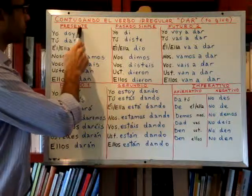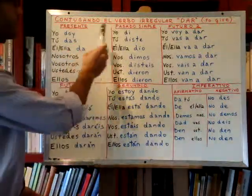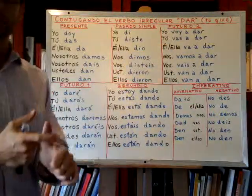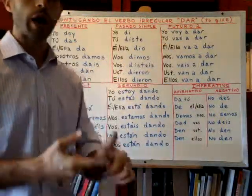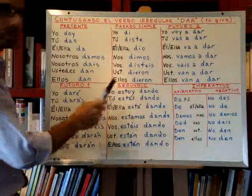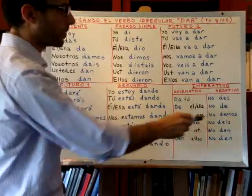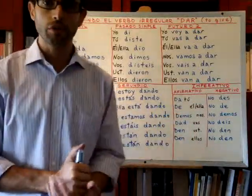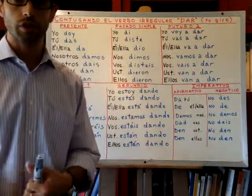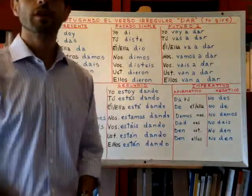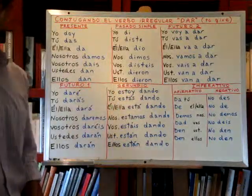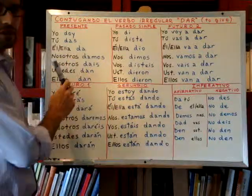We'll see the conjugation in the present, the simple past, the future — two types of future: 'I will give' and 'I am going to give' — the present continuous, and the imperative tense in both affirmative and negative. I have chosen these tenses because these are the most used tenses when we are speaking, and even writing. So these are the tenses we will be working with now.